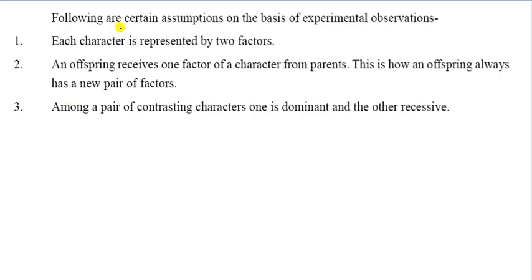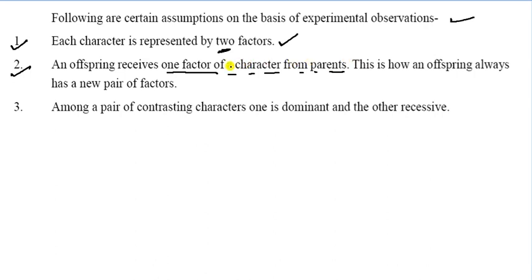Following are certain assumptions on the basis of experimental observation. First, each character is represented by two factors. Second, an offspring receives one factor of a character from each parent. An offspring always has a new pair of factors. Among a pair of contrasting characters, one is dominant and the other recessive.